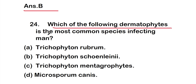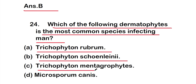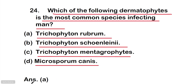Question 24: Which of the following dermatophytes is the most common species infecting man? Options: option A - Trichophyton rubrum, option B - Trichophyton soudanense, option C - Trichophyton mentagrophytes, or option D - Microsporum canis. The right answer is option A, Trichophyton rubrum, which is the most common dermatophyte species infecting man.